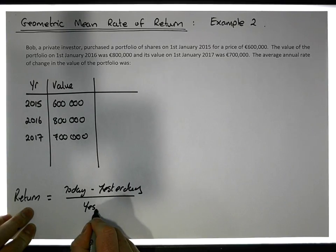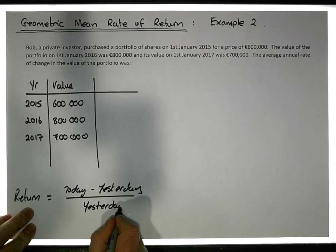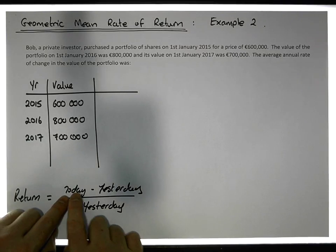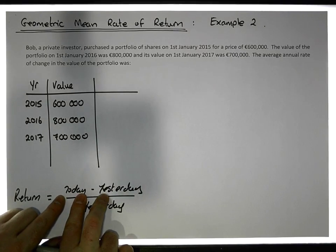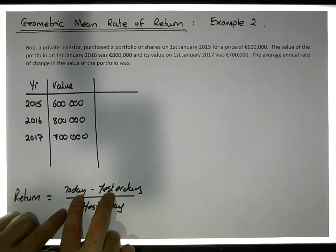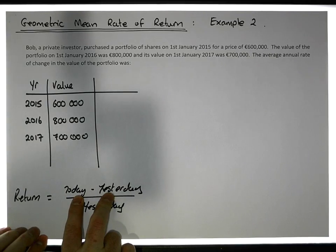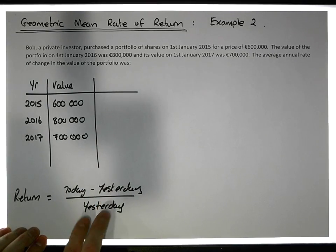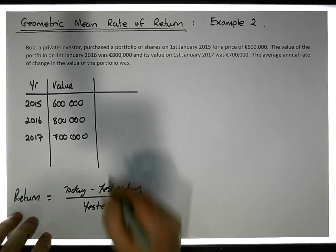All benchmarked off yesterday's value. Today's price minus yesterday tells us the change. If it's positive it means it increased, if it's negative it means a decrease. So we're benchmarking our change off yesterday's values, we're normalizing here.